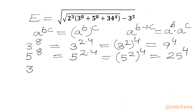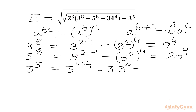Now for the term 3^5, I will write it as 3^(1+4). Using the second exponent property, I can write this as 3 times 3^4. This can be written as 3 times (3²)², which is 3 times 9².